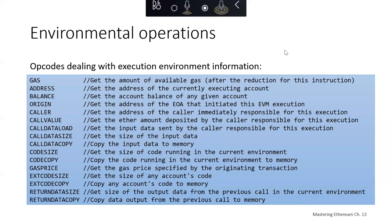For environmental operations, we've got operation codes that deal with the execution environment information. We can get the amount of available gas after including how much gas was spent to call GAS to retrieve the amount of gas, because it actually costs gas to figure out what the amount of available gas is, which is pretty funny. We've got an ADDRESS operator to get the address of the currently executing account, a BALANCE to get the account balance of any given account, an ORIGIN operator to get the address of the wallet that initiated the EVM execution, and a CALLER that gets the address of the caller who called this execution.